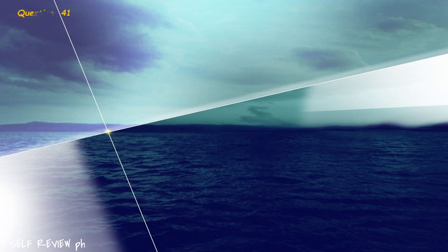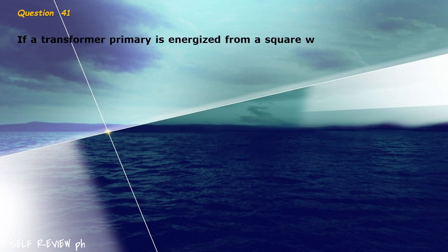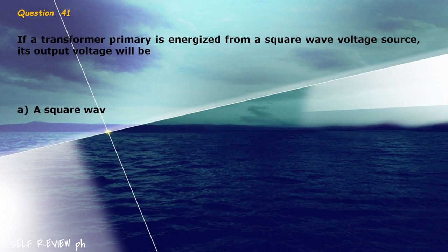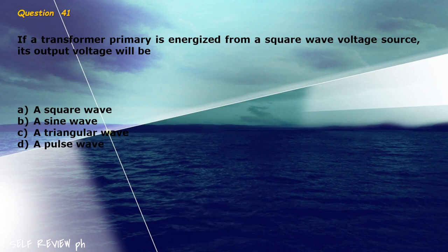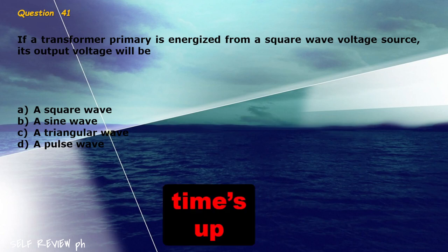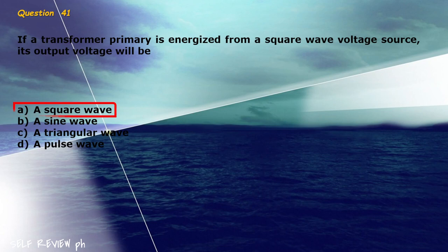Question 41: If a transformer primary is energized from a square wave voltage source, its output voltage will be blank. A) a square wave, B) a sine wave, C) a triangular wave, D) a pulse wave. The correct answer is letter A, a square wave.